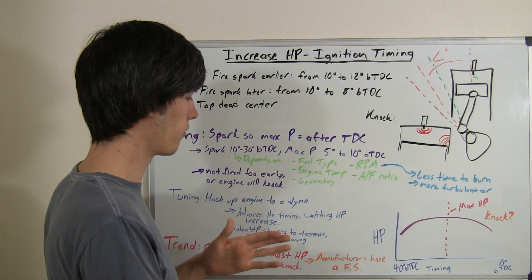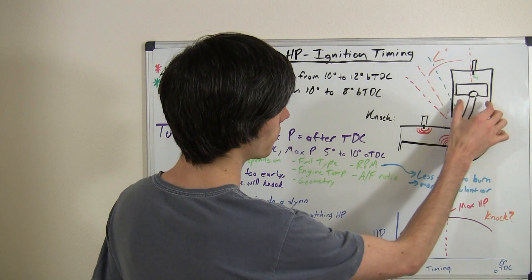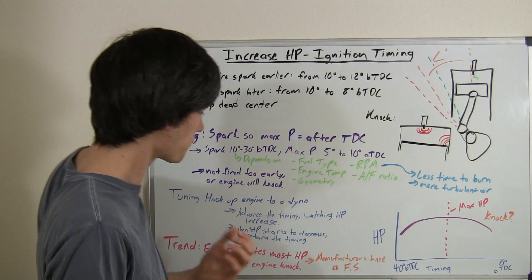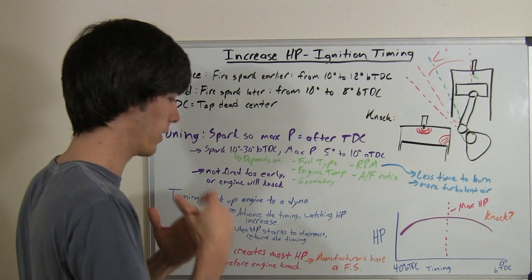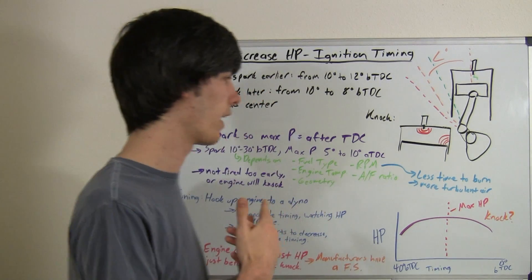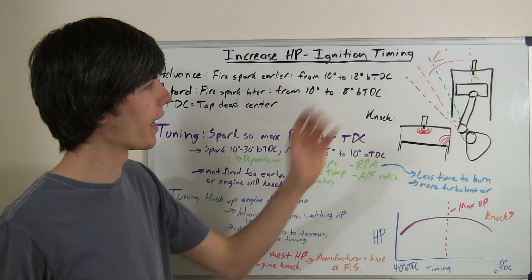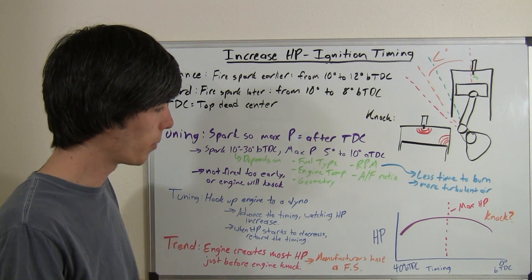But basically you're going to want to have independent control of the timing for each of these. So what you're going to do then is you're going to advance the timing, so fire the spark plug earlier as the piston is lower down, and watch the horsepower increase. And then once the horsepower begins to decrease, you know that you need to retard the timing a bit, you need to back off, and you can increase the horsepower.